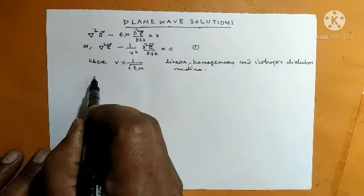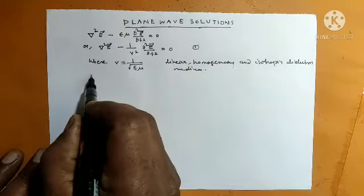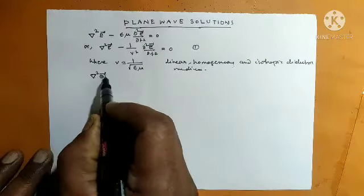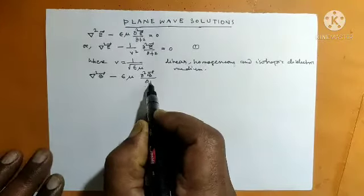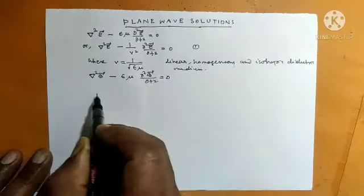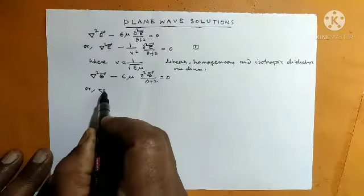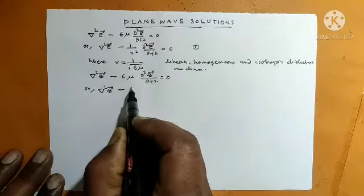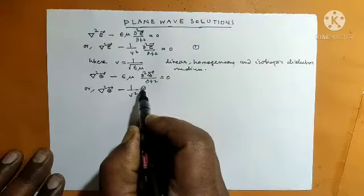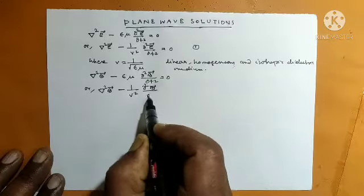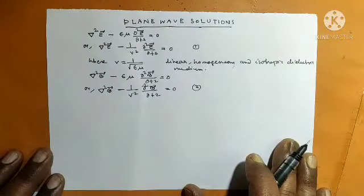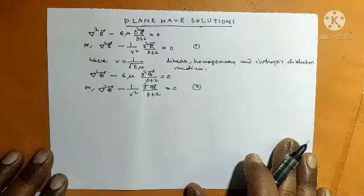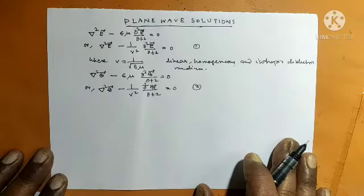Similarly, the wave equation for the magnetic field is: del squared B minus epsilon mu del squared B by del T squared equals zero, or del squared B minus 1 by V squared del squared B by del T squared equals zero. These are the wave equations for the electric field and magnetic field, respectively.